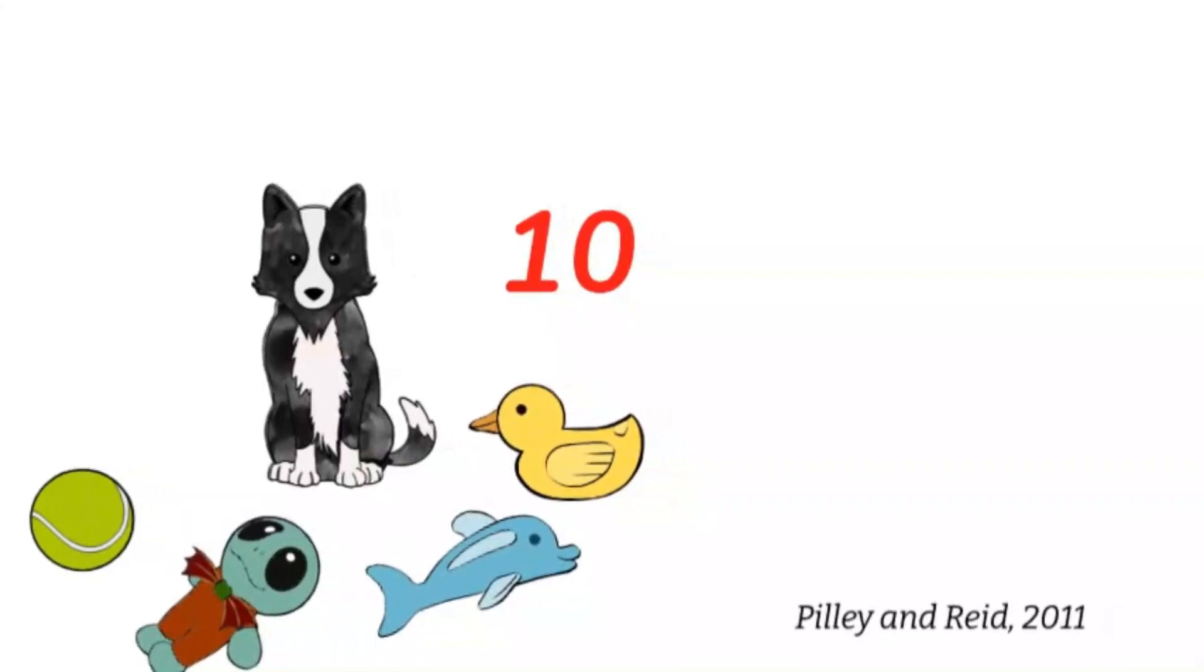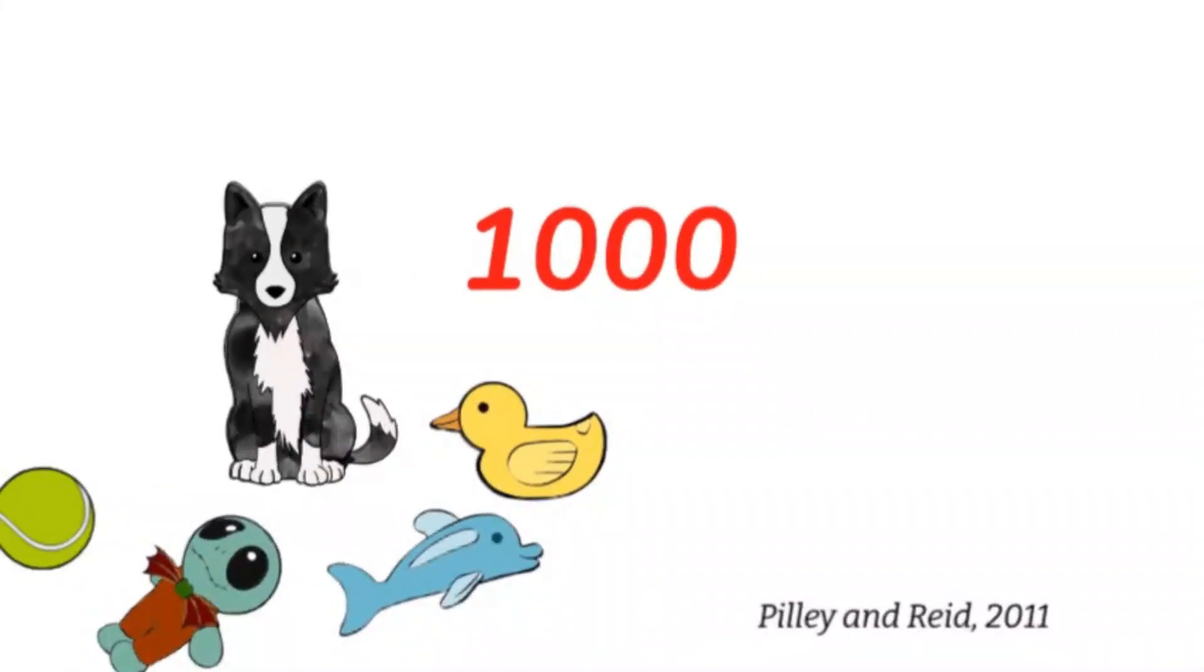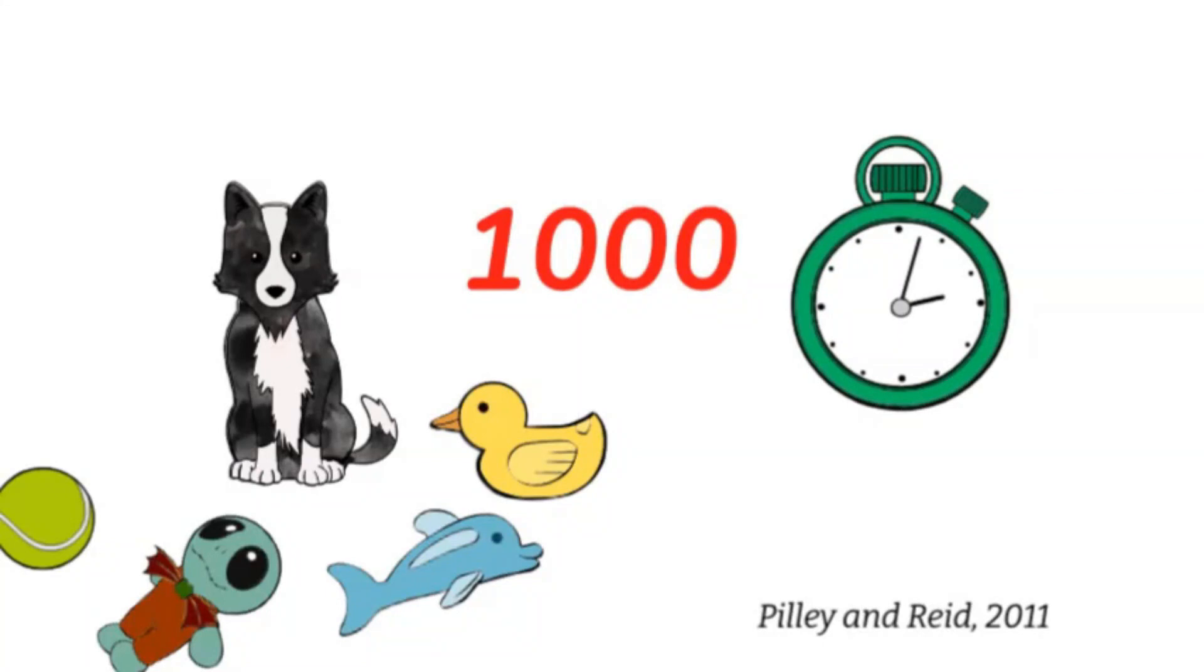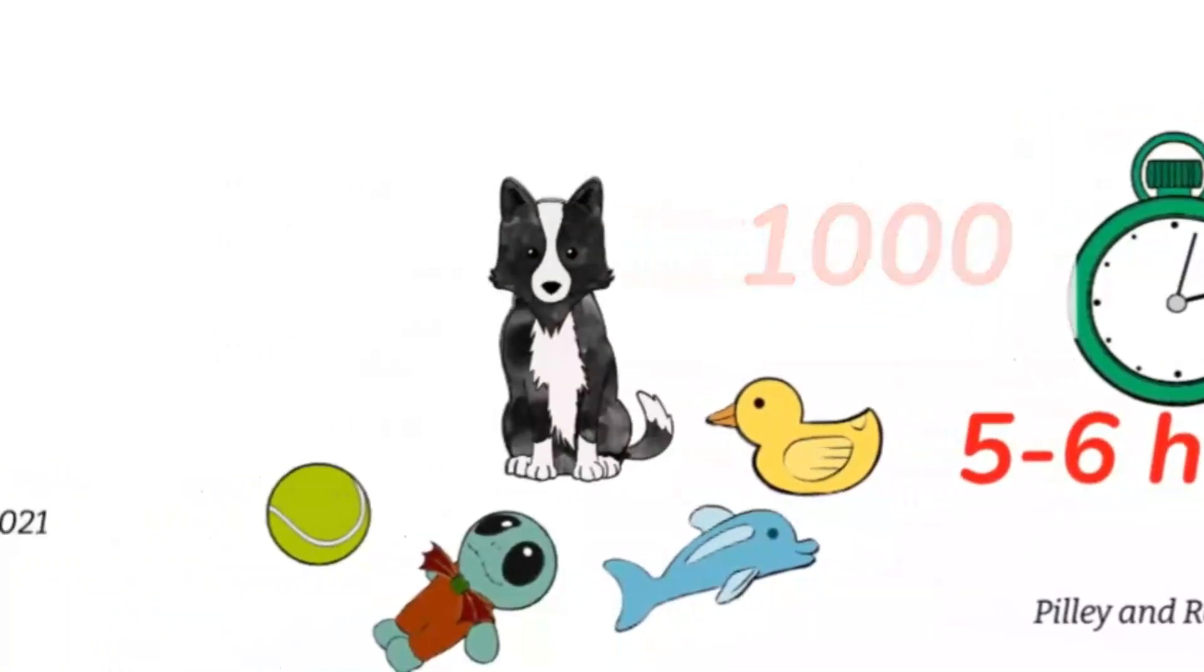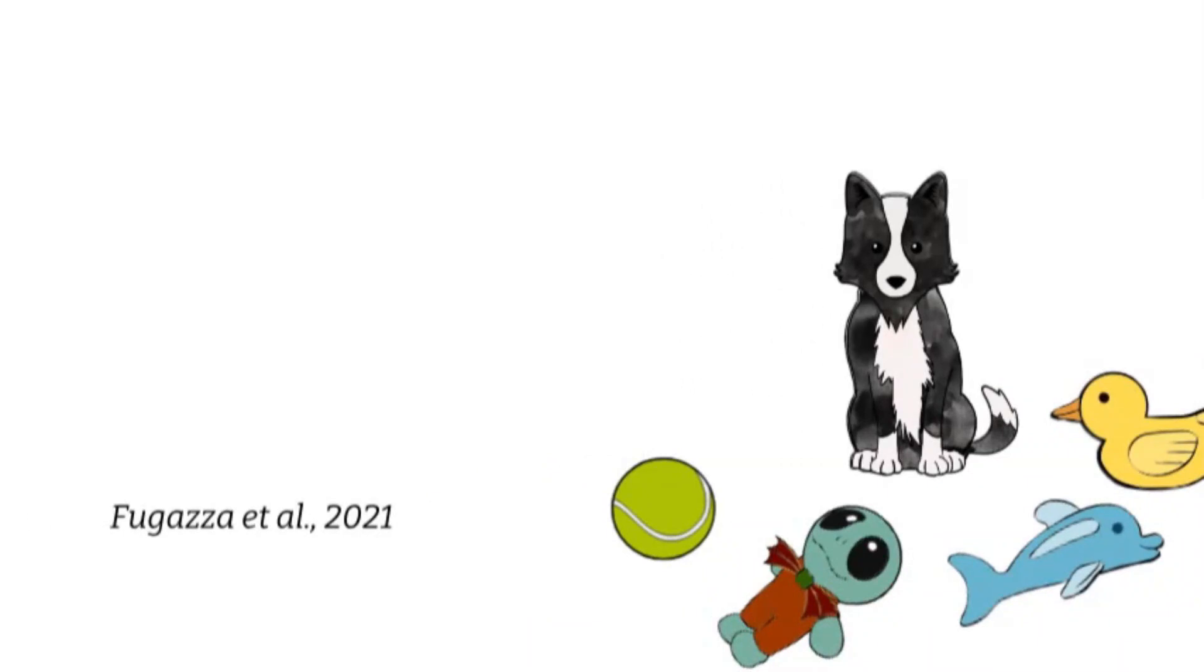One study described how a dog was able to learn the names of over a thousand objects after being exposed to a very intensive training protocol that included five to six hours of professional training each day for three years. In another study, dogs were able to learn the names of new objects after hearing their names only four times, but their memory declined rapidly after only a couple of minutes.